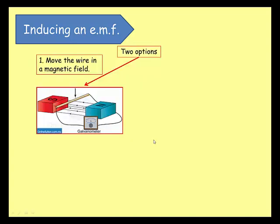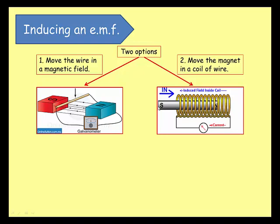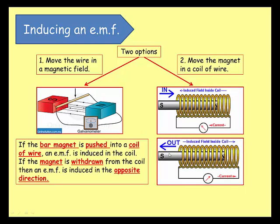There are two options to put that into practice. First, you can move the wire in the magnetic field. Second, you can keep the wire still and move the magnet instead. For the second option, you can make the wire into a coil. As long as the magnet is moving you'll get a current. The bar magnet pushed into the coil induces an EMF; if the magnet is withdrawn, you get an EMF in the opposite direction — so movement of the magnet gives you an EMF.